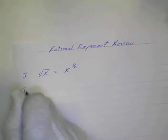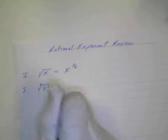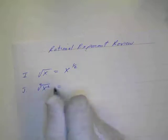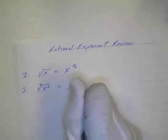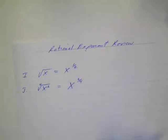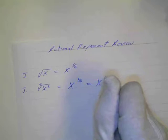Letter j, the fourth root of x squared. So remember, this is going to be the numerator, and that's going to be the denominator, so this is going to be x to the two over four. Remember our rules. And then we can reduce that to x to the one-half.